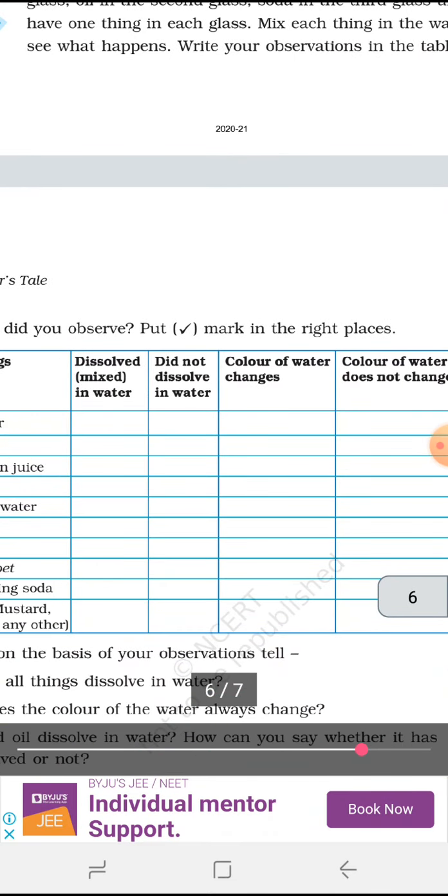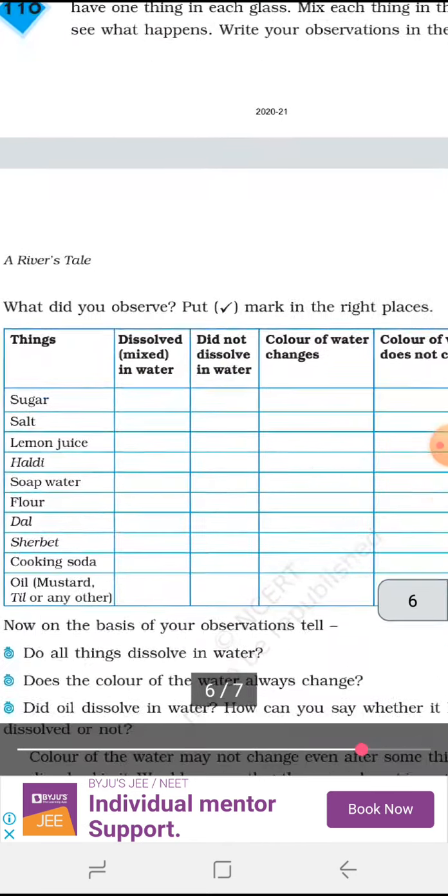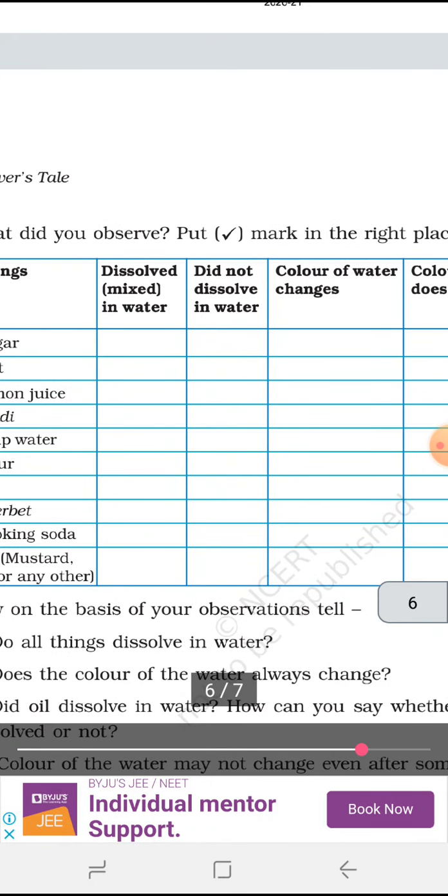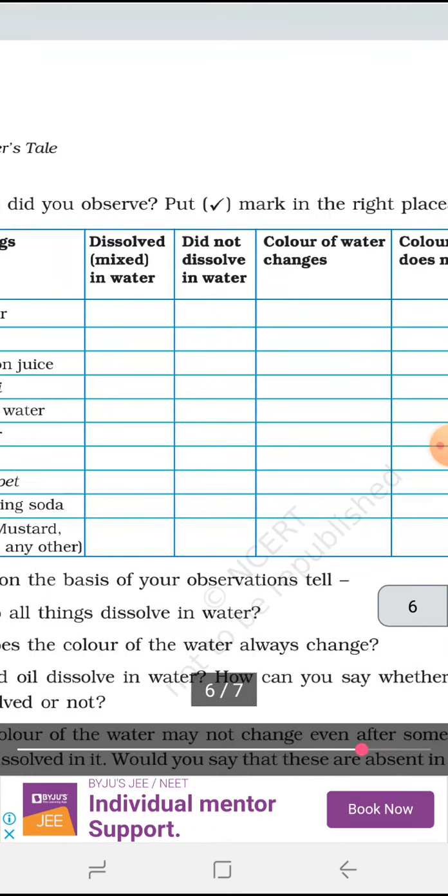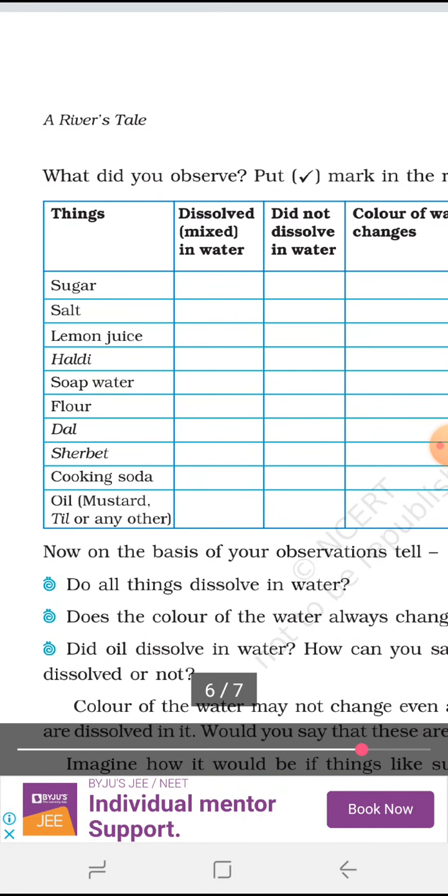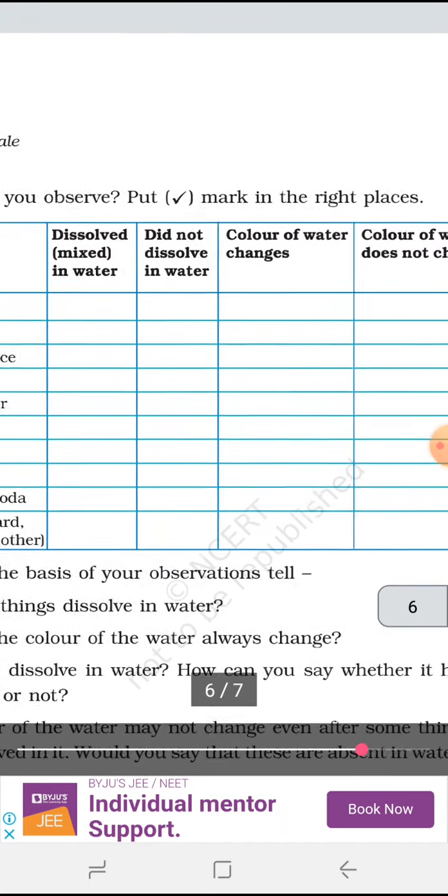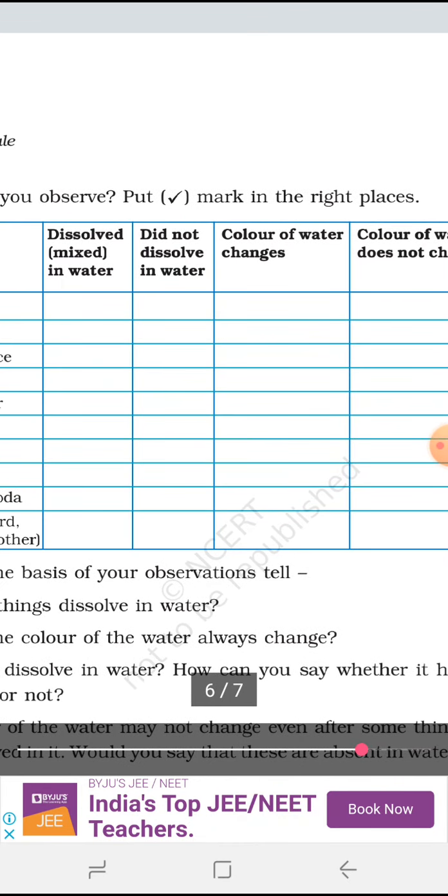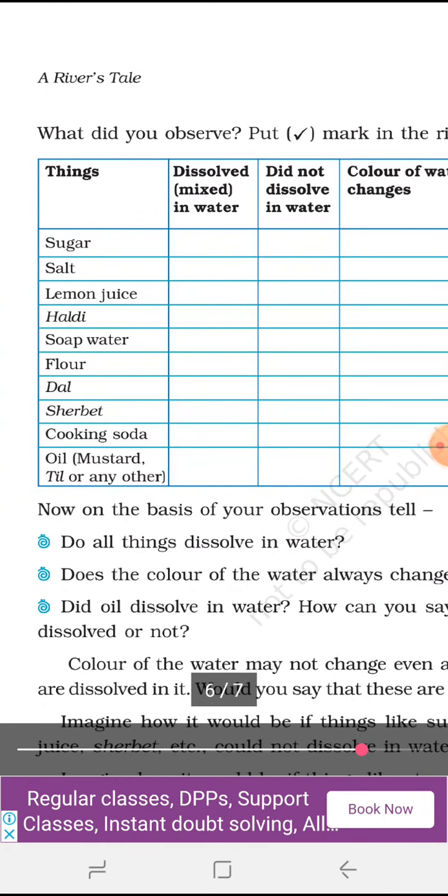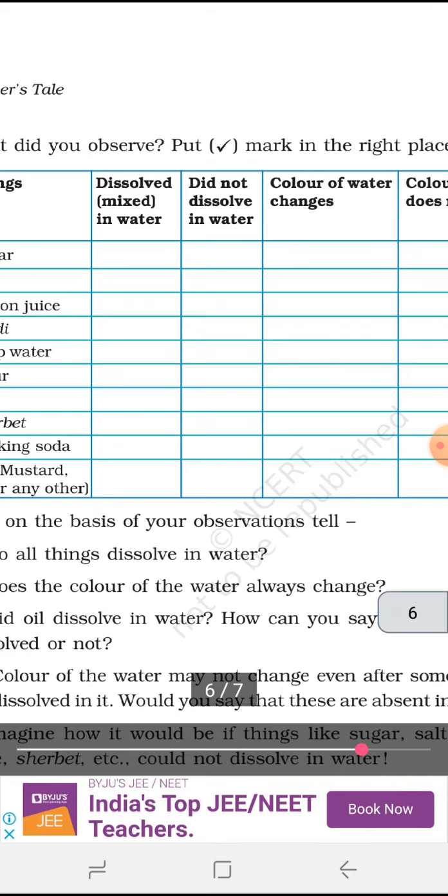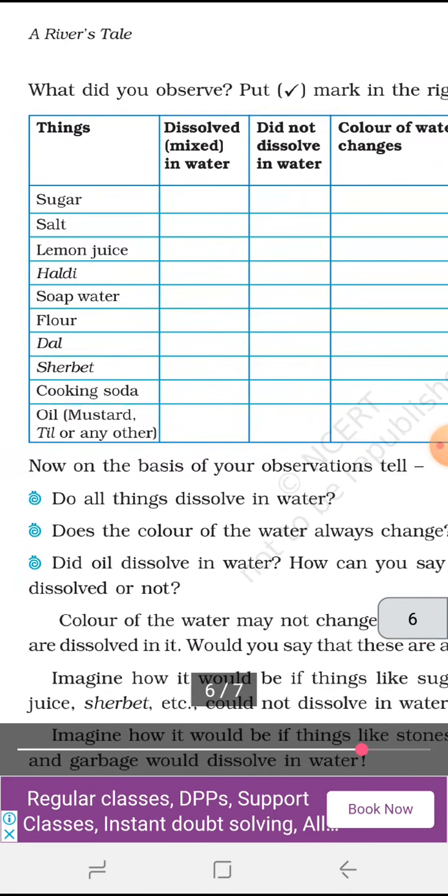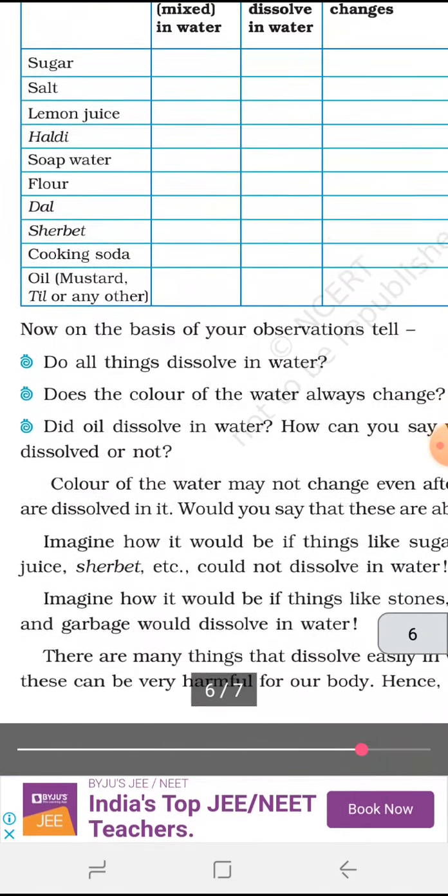Write your observation in the table. Here is the table. We have to write your observations. Sugar dissolve mixed in water. Did not dissolve in water. Color of the water changes. Color of the water does not change. This way you are going to write your observation in this chart.